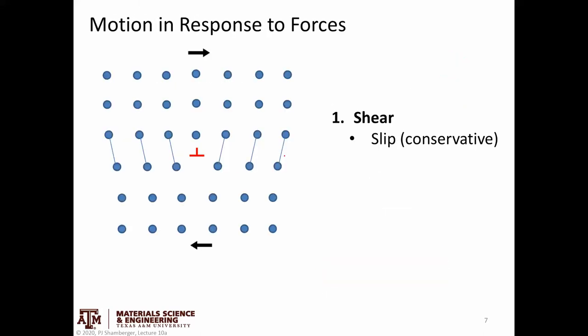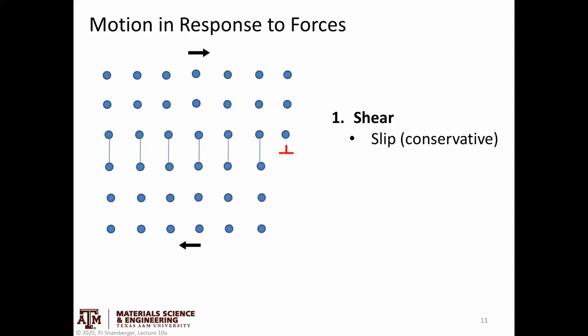Let's think about how a dislocation moves in a lattice in response to a shear force. The top part of the lattice is pushed to the right and the bottom part to the left. In response, this edge dislocation will move from its initial position to the right.